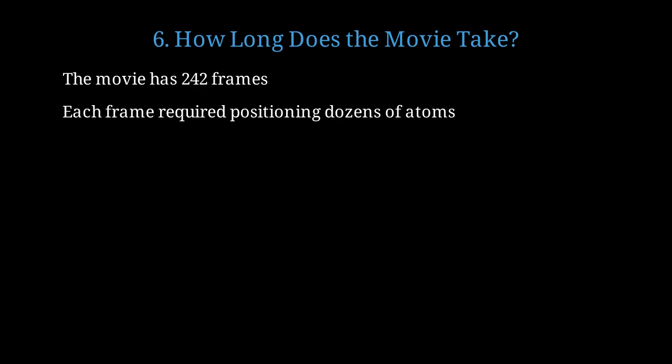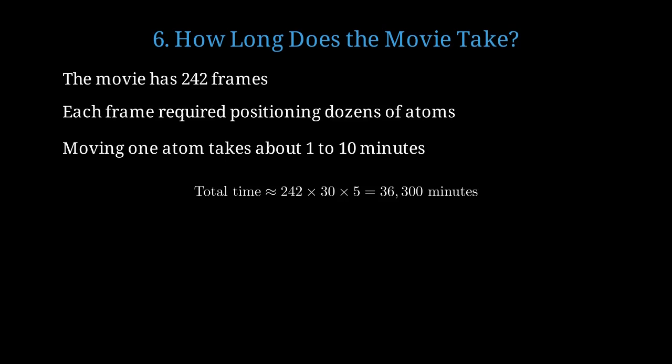Each frame required carefully positioning dozens of individual atoms, which is like the world's most tedious game of atomic Tetris. Moving a single atom precisely takes anywhere from 1 to 10 minutes, because you have to be extremely careful. If each frame has 30 atoms and takes 5 minutes per atom on average, that's 36,300 minutes total.